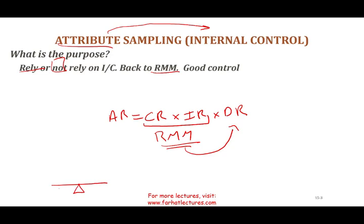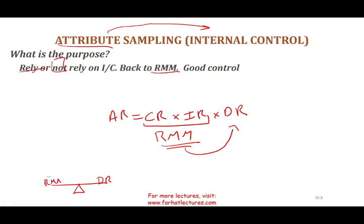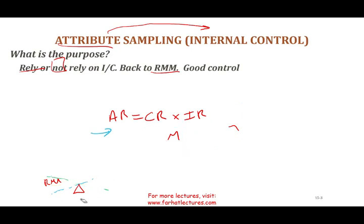You can imagine this on a seesaw: if RMM goes up, detection risk goes down, and if RMM goes down, detection risk goes up. Make sure you know this relationship and know the audit risk model well — it's a key part of the CPA exam, and I covered it in a separate recording.